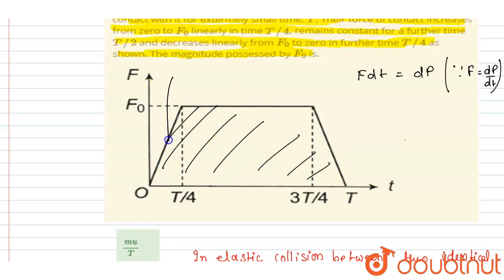If you see the area of this part, this is a triangle and this is a triangle. Both are of same base and same height. The base is t by 4 here, the base is also t by 4 and the height is f naught. So let's calculate the area now. So half into base into height, again half into base into height.